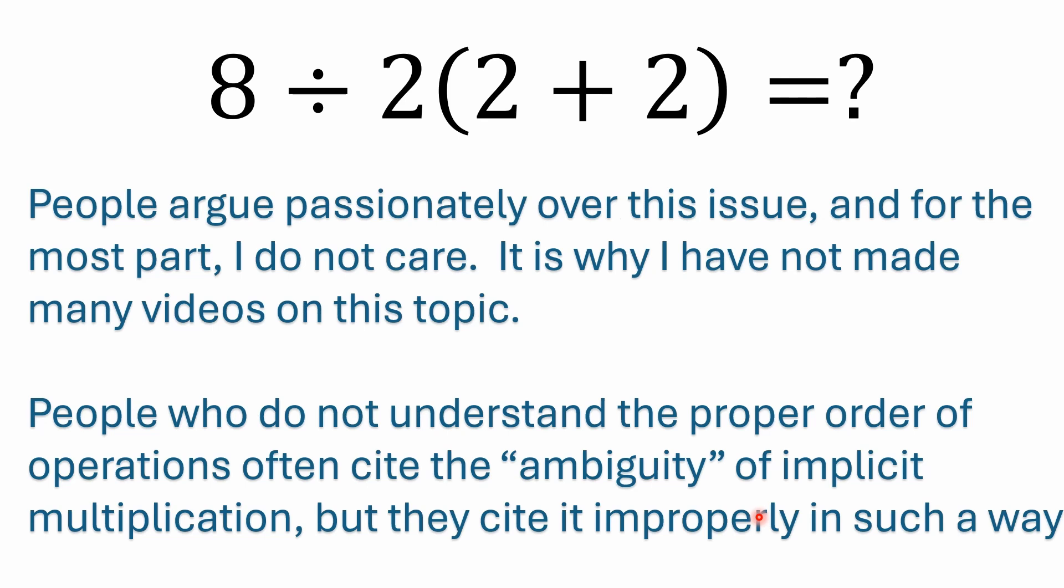Now, the order of operations convention, how it's typically taught, at least here in North America and elsewhere in the world as well, is pretty clearly defined. However, there is historical precedence for a lesser-known convention that attributes a higher priority to multiplication that's implicit. People argue passionately over this issue, and for the most part, I don't care about either argument because we have two conventions here that have a little disagreement which brings up an ambiguity that really does exist. But people will use that ambiguity in the wrong way.